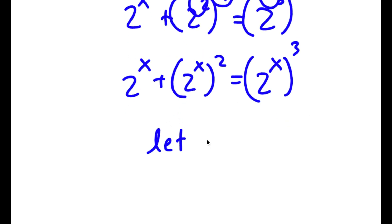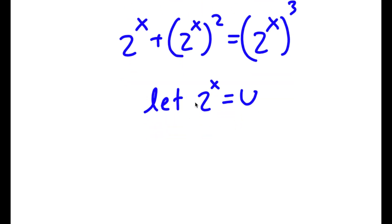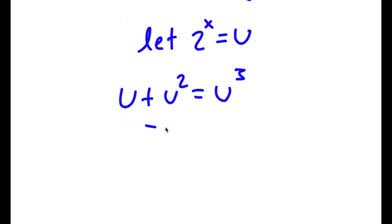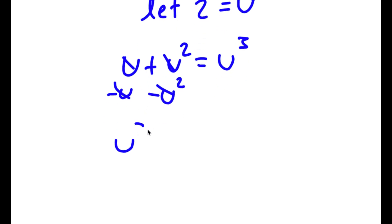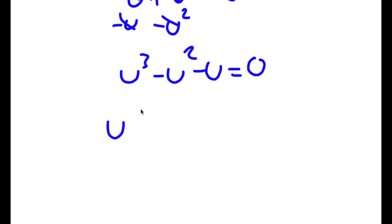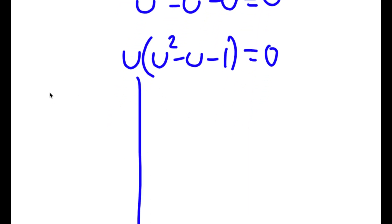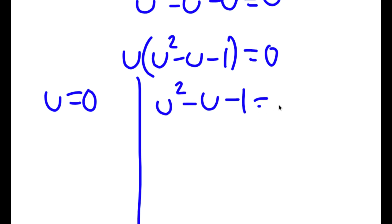Now I can let 2 to the power of x equal u. So if I replace 2 to the power of x with u, I get u plus u squared is equal to u to the power of 3. And if I subtract u squared and u on both sides, I get u to the power of 3 minus u squared minus u is equal to 0. Now I'm going to factor out u, so I get u times u squared minus u minus 1 is equal to 0. This gives me two equations: u is equal to 0, and u squared minus u minus 1 is equal to 0.